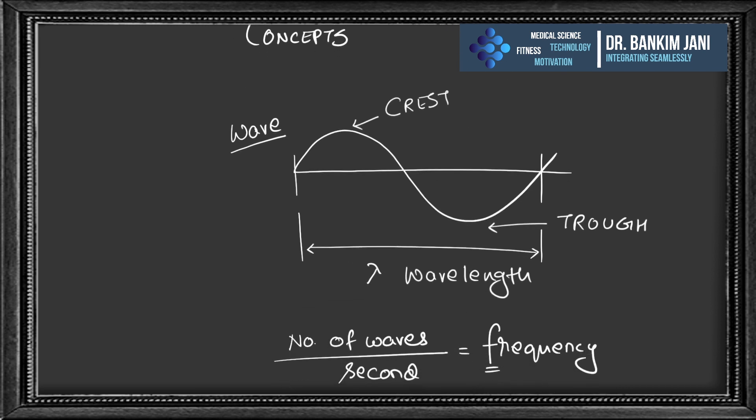A wave is a kind of oscillation, and it travels through space and matter. Wave motions transfer energy from one place to another. There is a crest, which is the highest point, and the trough, which is the lowest point.